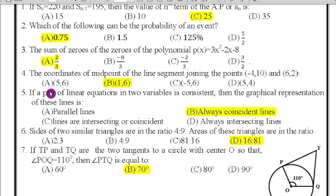Fourth question: the coordinates of midpoint of the line segment joining the points (-4, 10) and (6, 2). Here you have to find the midpoint formula. We have formula P(x, y) equals (x₁ + x₂)/2, (y₁ + y₂)/2. Substitute all the coordinates then you will get the answer (1, 6).